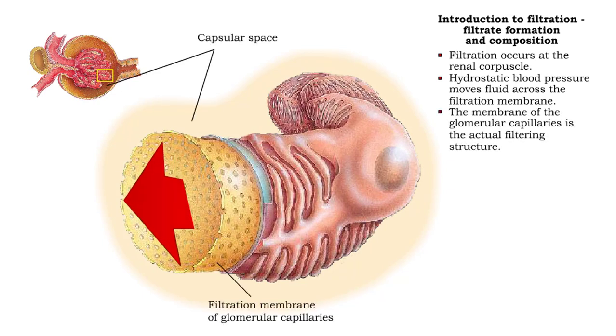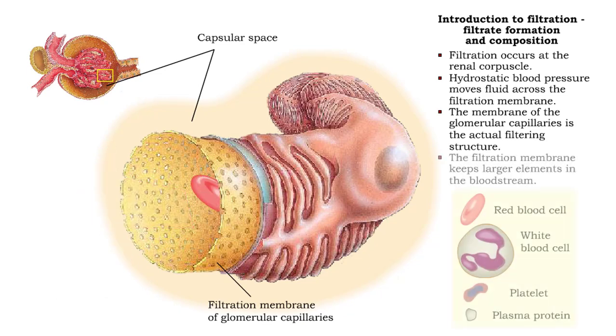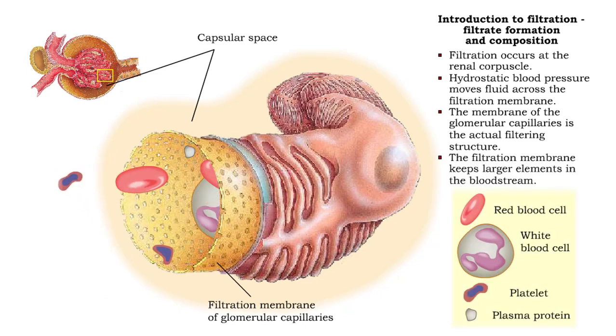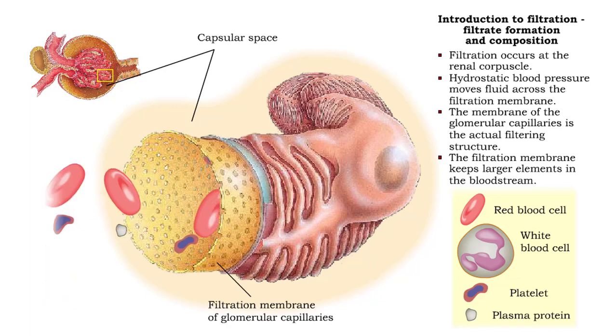The membrane of the glomerular capillaries is the actual filtering structure. The filtration membrane keeps larger elements in the bloodstream.